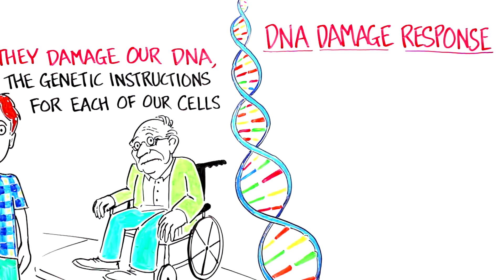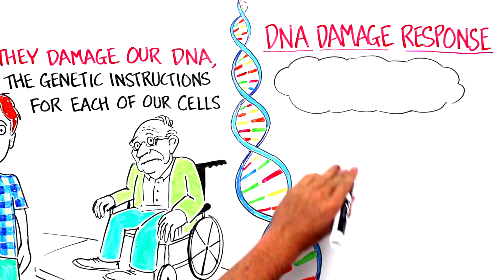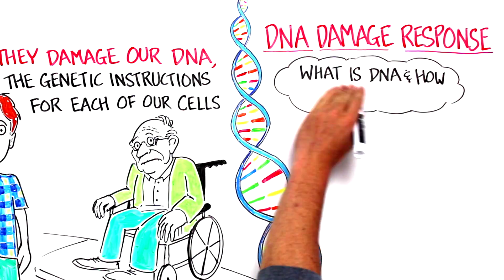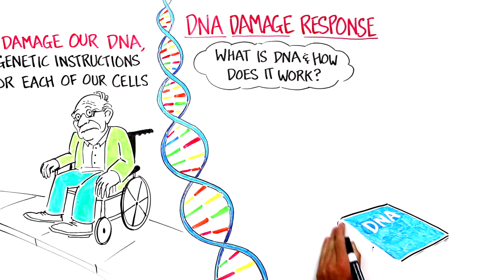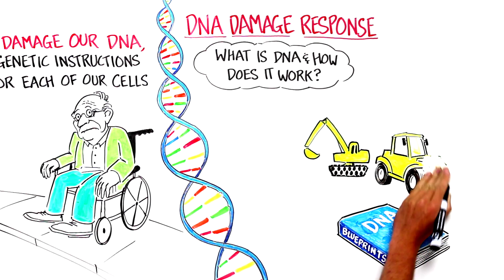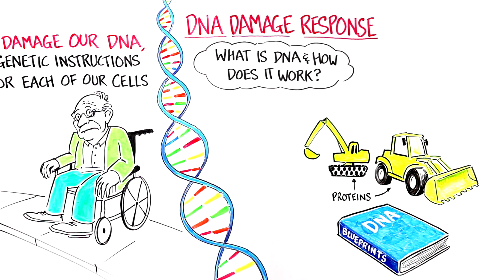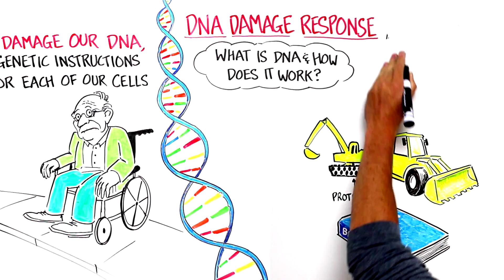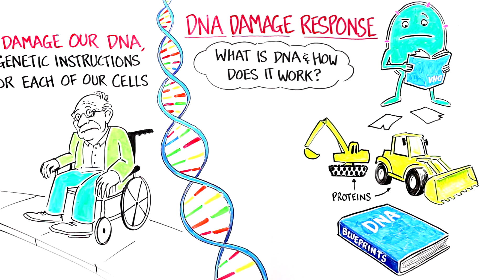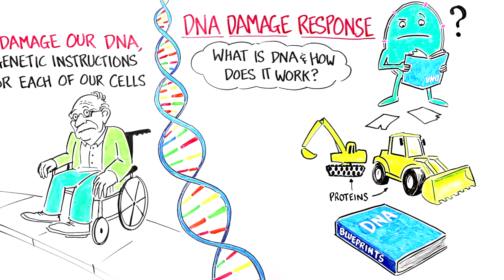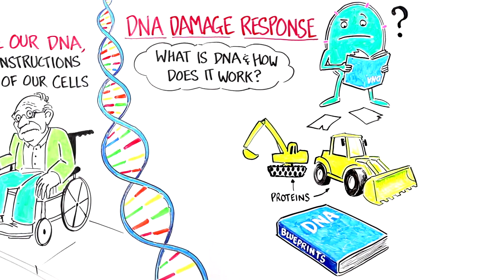To understand the DNA damage response, you first need to know a little bit about what DNA is and how it works. A cell's DNA is kind of like a book of blueprints for building different molecular machines called proteins, which are the primary workhorses of the cell. If a page gets torn or blurred, the cell might not be able to make that particular protein correctly. Depending on which protein is affected, the cell could get sick, divide uncontrollably, or die.